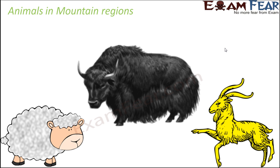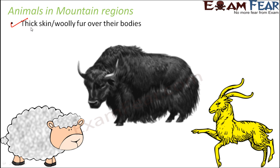For example, sheep, yak, and certain varieties of goats are all very commonly seen in mountain regions. These animals generally have thick skin or woolly fur over their bodies to protect them from the cold. Moreover, at higher altitude the amount of oxygen in the air is also less. Therefore, certain animals like yak also have larger hearts and lungs, so that the oxygen-pumping capacity of the body increases and they can cope with the limited supply of oxygen. That is one type of internal adaptation.